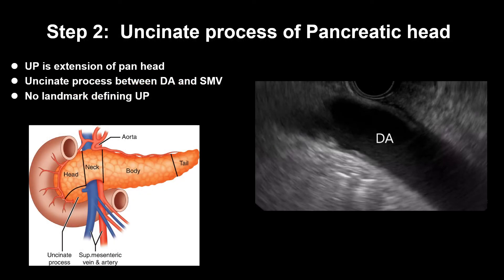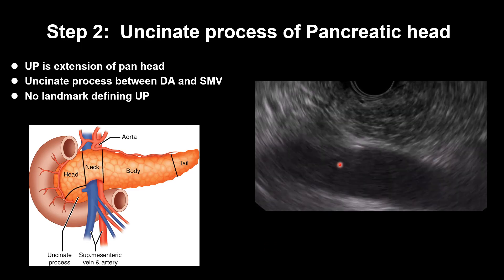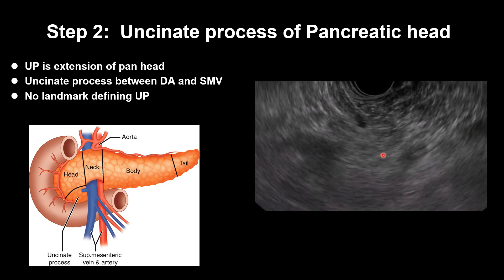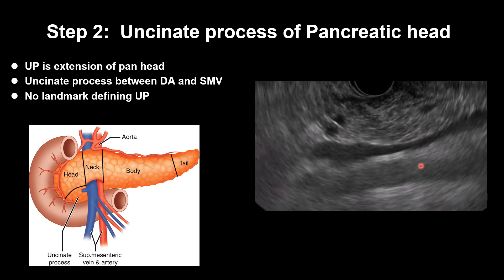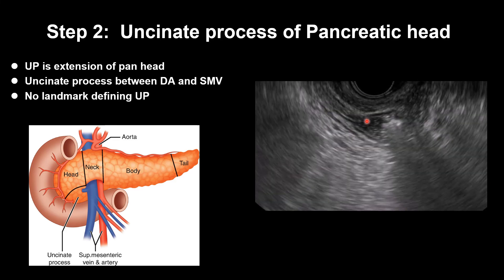Step 2: uncinate process of the pancreatic head. The uncinate process is an extension of the pancreatic head. There is no single landmark defining the uncinate process. Usually, the uncinate process is located between the descending aorta, SMV, and SMA area. The uncinate process is located between the SMV and descending aorta.